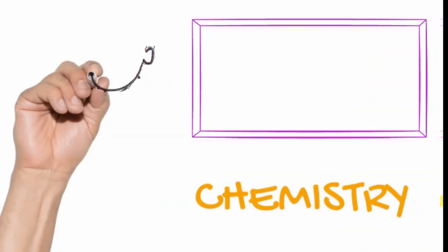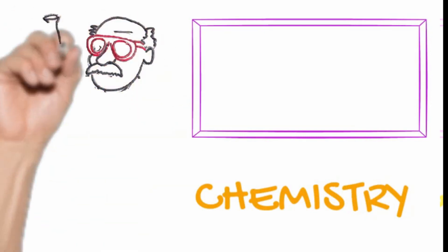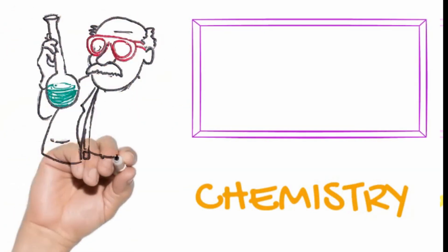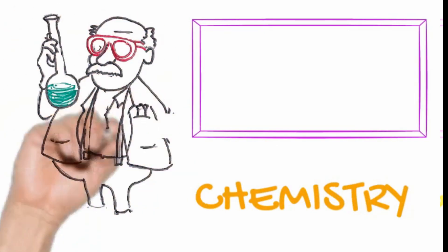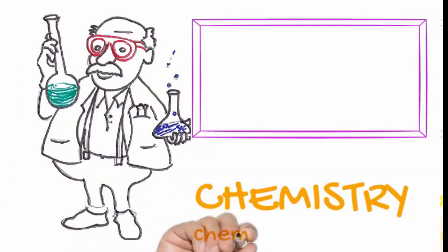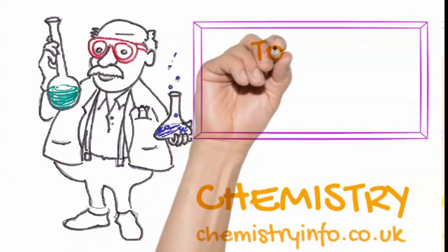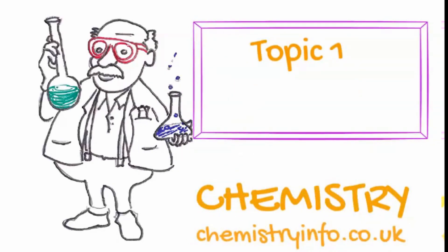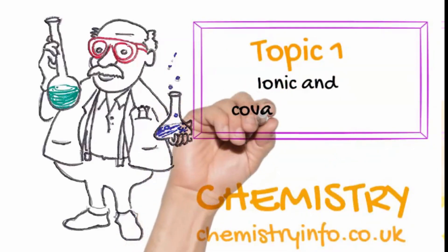Another in the series of chemistry tutorials from chemistryinfo.co.uk. Topic 1: Ionic and Covalent Bonds.